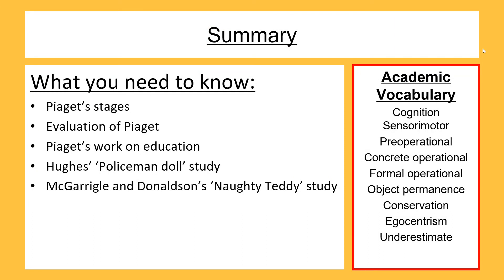As a quick recap, we've just run through everything we need to know about Piaget for this topic: his stages, the evaluation of him, how he impacted education, and the two studies that show he underestimated children and their ability. Keep revising, and I'll see you in the next video.